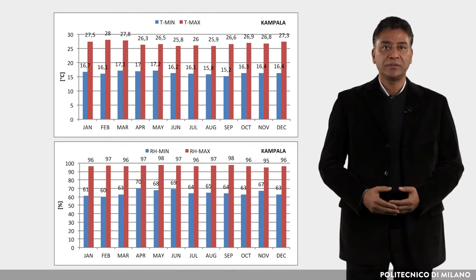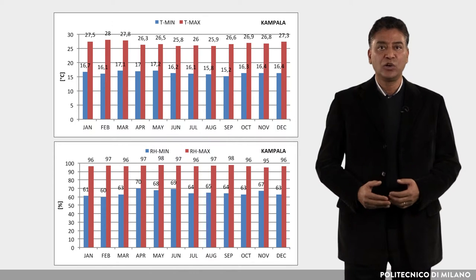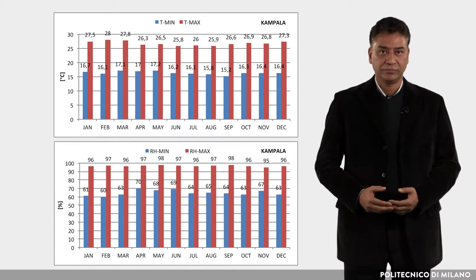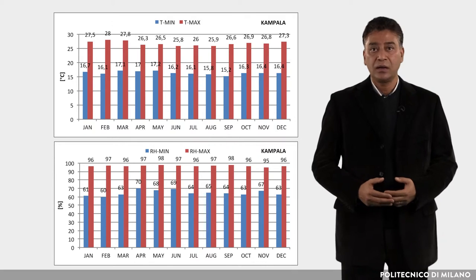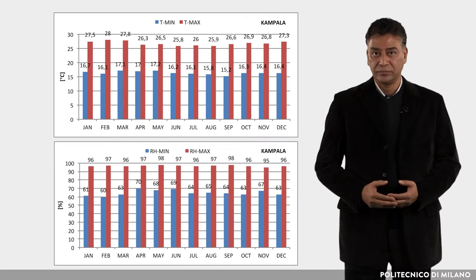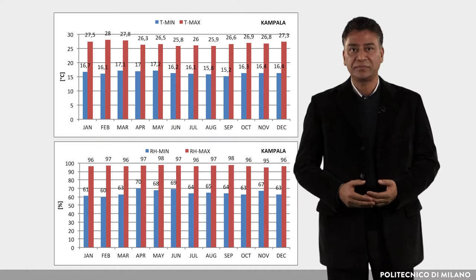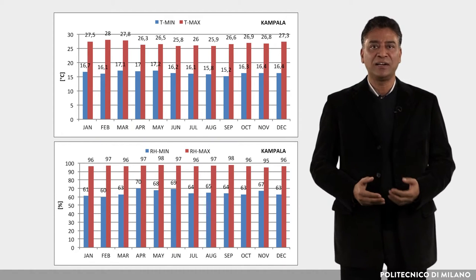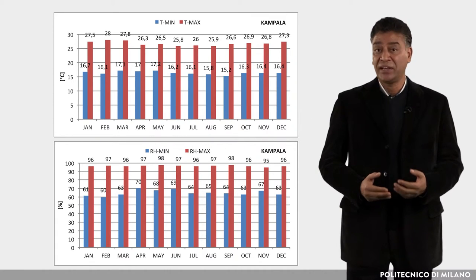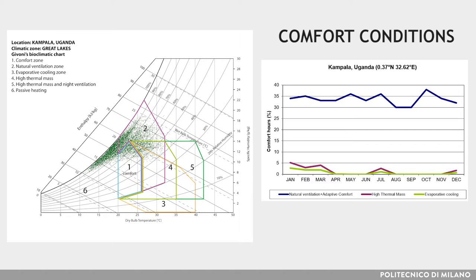The temperature is slightly lower than in the savannah zones, but daily variations are comparable. Humidity is higher than in the savannah zone, even at the same altitude range, due to the lakes. This zone has a remarkably stable climate with very slight seasonal and daily differences of temperature and humidity.